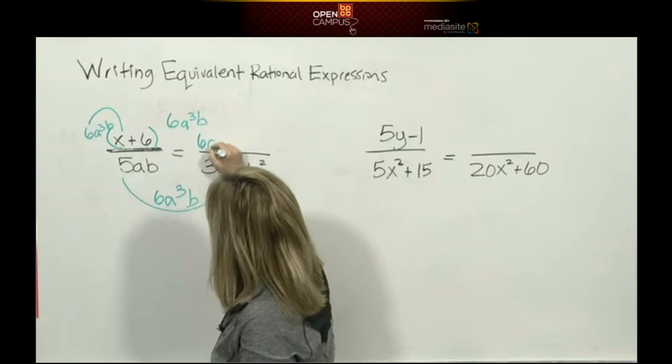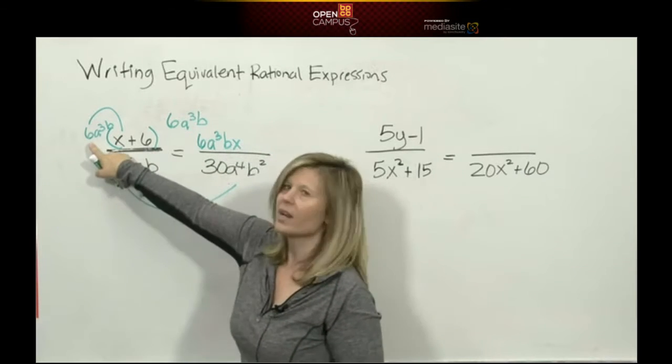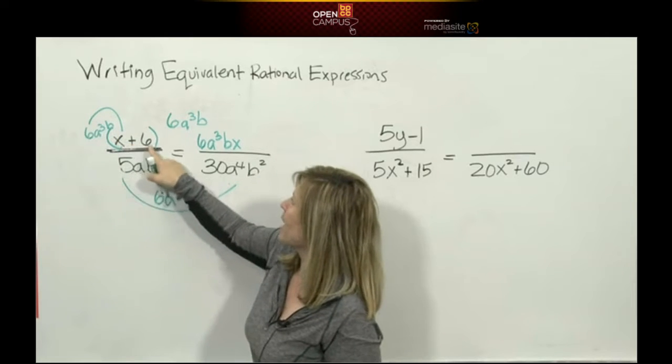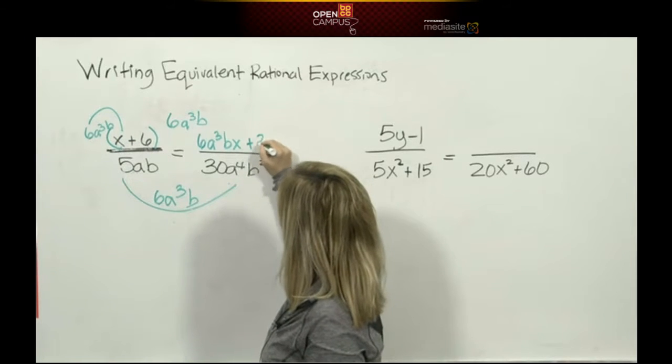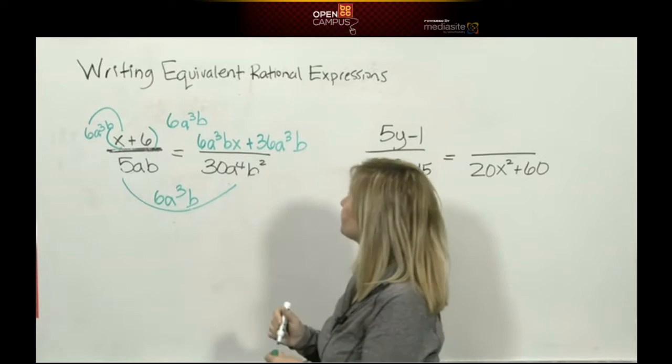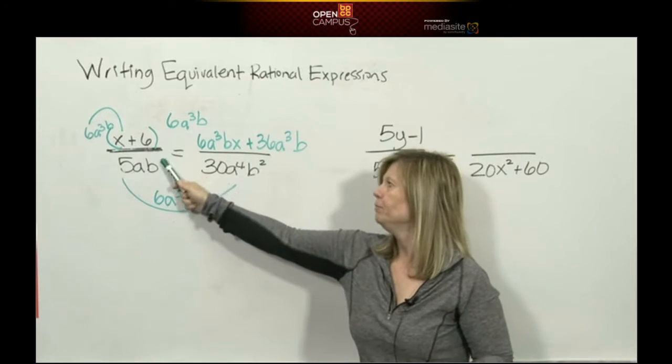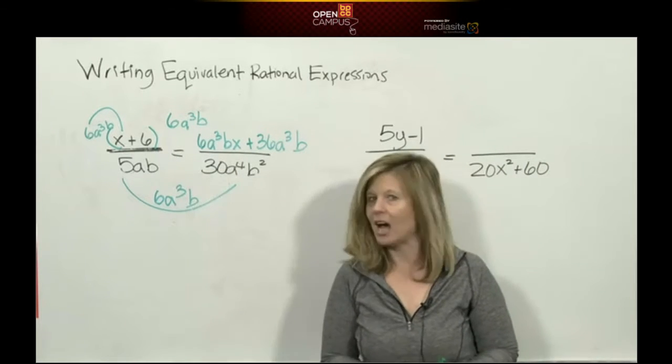What is 6a³b times another positive 6? Well, that'd be positive 36a³b. And what you've done now is you've made your new numerator.